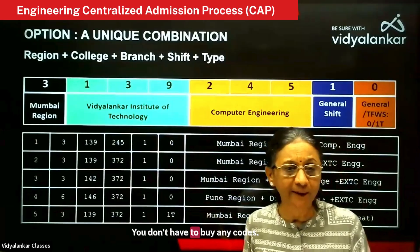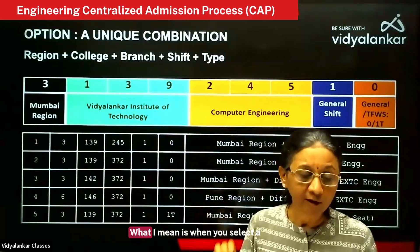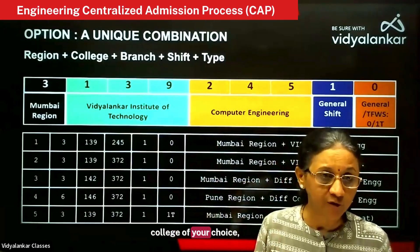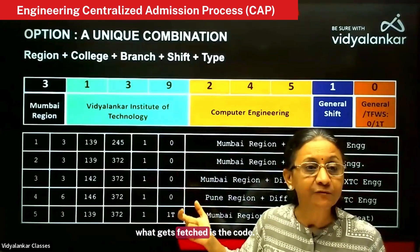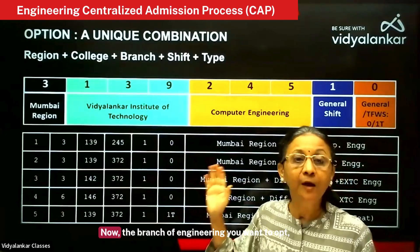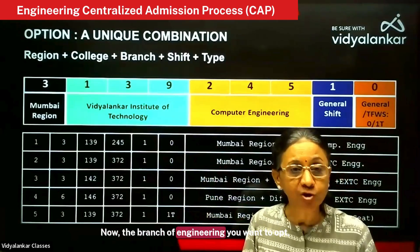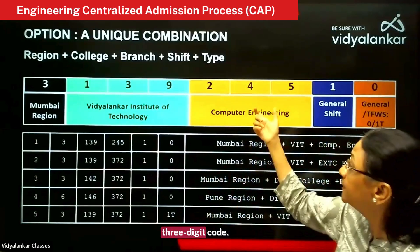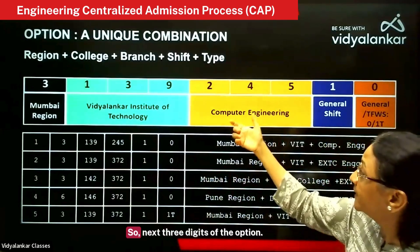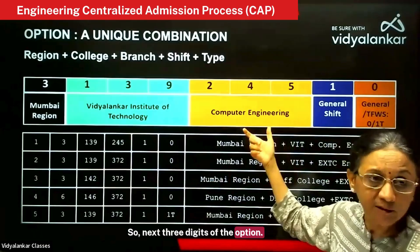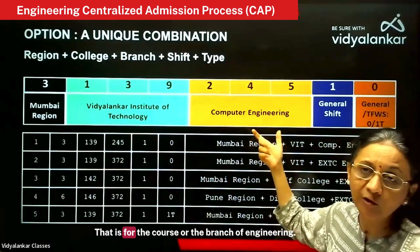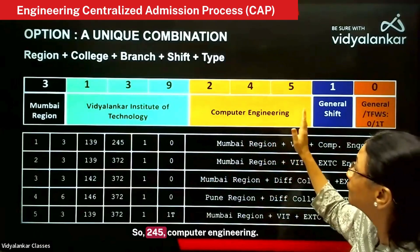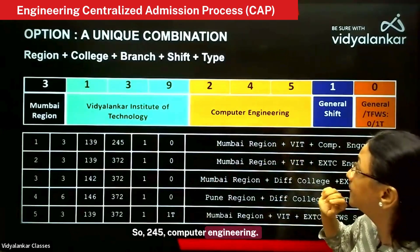You don't have to look up any codes manually. When you select a college of your choice, the code gets fetched automatically. Now, the branch of engineering you want to opt — say computer engineering — has a three digit code. The next three digits of the option are for the course or the branch of engineering. So 245 is for computer engineering.